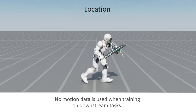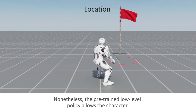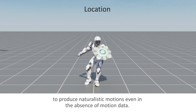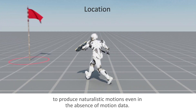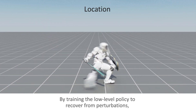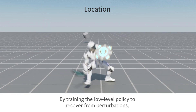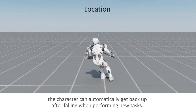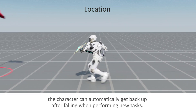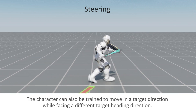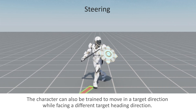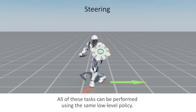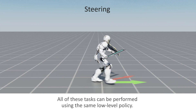No motion data is used when training on downstream tasks. Nonetheless, the pre-trained low-level policy allows the character to produce naturalistic motions even in the absence of motion data. By training the low-level policy to recover from perturbations, the character can automatically get up after falling when performing new tasks. The character can also be trained to move in a target direction while facing a different target heading direction. All of these tasks can be performed by using the same low-level policy.